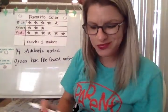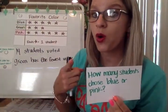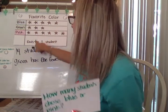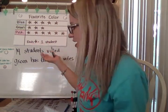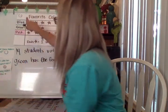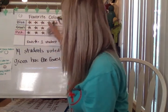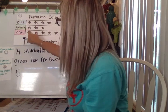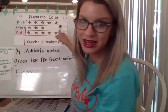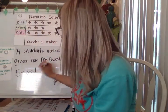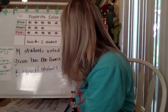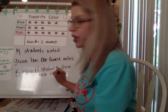Our next question: how many students chose blue or pink? We're going to look at the data for blue and also for pink, remembering that each star represents one student. All we have to do is count up blue plus pink. Blue has 5, and pink has 6. You could count on and say 5, 6, 7, 8, 9, 10, 11 — or just know that 5 plus 6 is 11. So 11 students chose blue or pink.